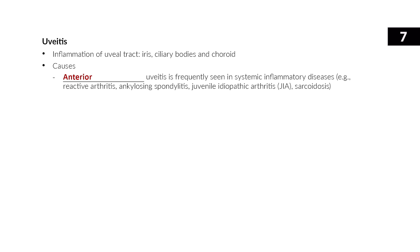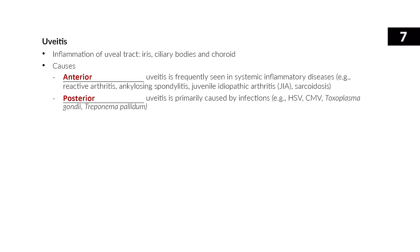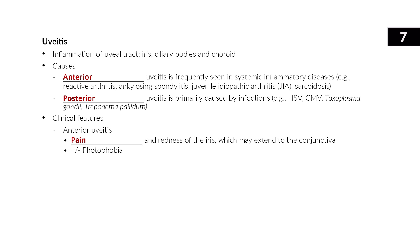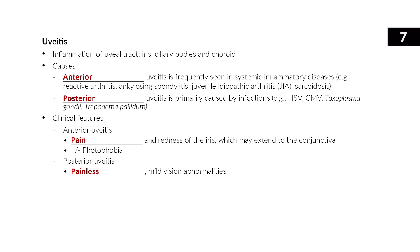Uveitis is inflammation of the iris, ciliary bodies, and choroid. Anterior uveitis is usually related to systemic inflammatory diseases like reactive arthritis, ankylosing spondylitis, juvenile idiopathic arthritis, or sarcoidosis, and causes pain and redness of the iris that often extends into the conjunctiva. Posterior uveitis is most commonly caused by infections like herpes simplex, CMV, toxoplasma, Bartonella, or rarely syphilis, and causes painless mild vision abnormalities. Treat infections with topical antibiotics; treat non-infectious inflammation with topical or systemic glucocorticoids.